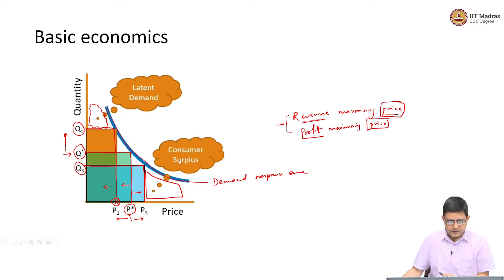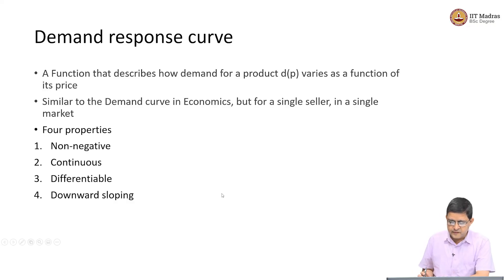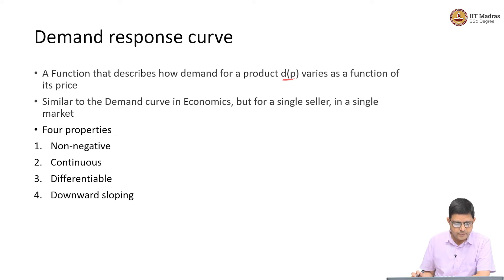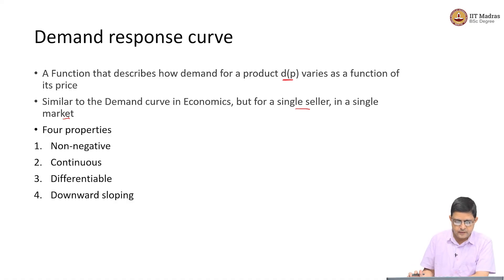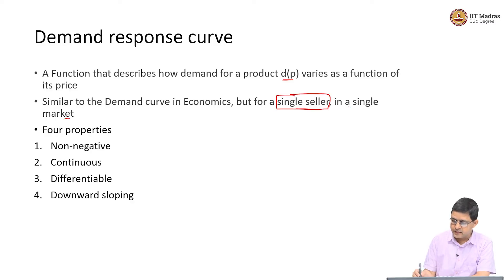This is the basics of the demand response curve — the blue curve shown here. It is essentially a function that describes how demand varies as a function of price, very similar to the demand supply curve in economics. However, this is for a single seller in a single market, whereas the demand supply curve aggregates various supply and demand in the market. So this is slightly different — we are considering a single seller at a single time point in a single market.